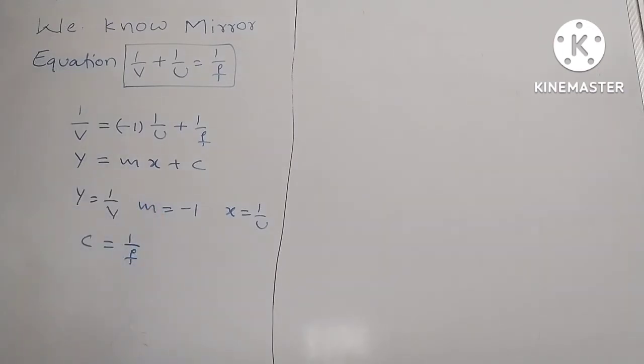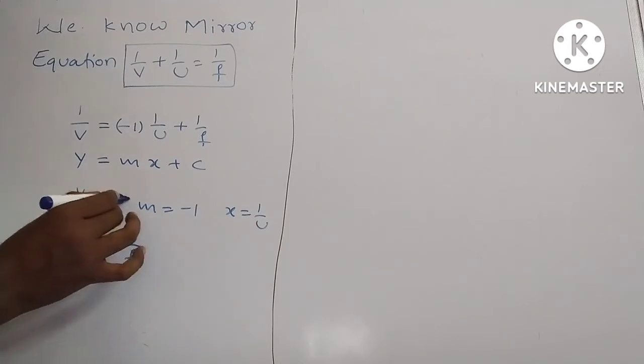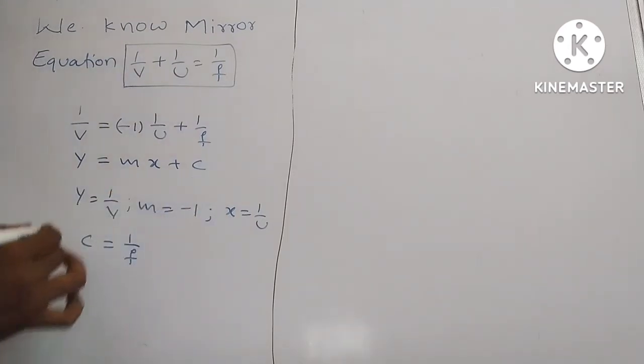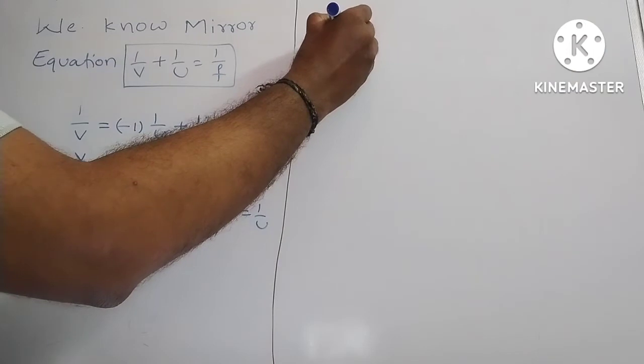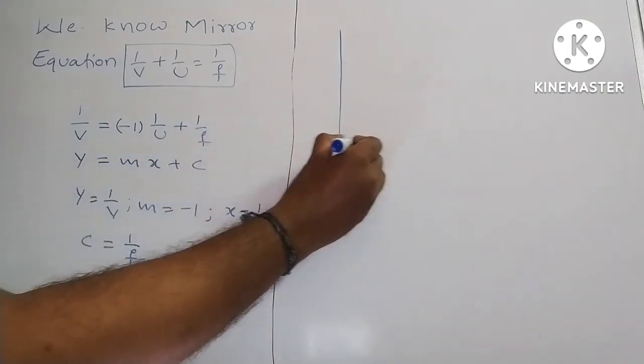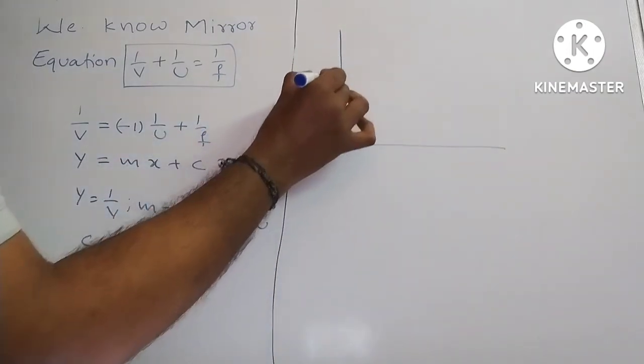c means intersecting point on y axis. If you observe here, these are parameters. I will draw the graph between 1 by v and 1 by u.